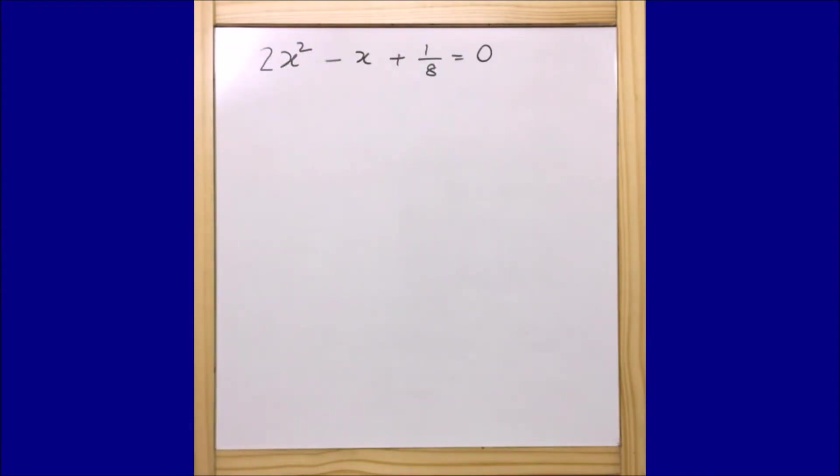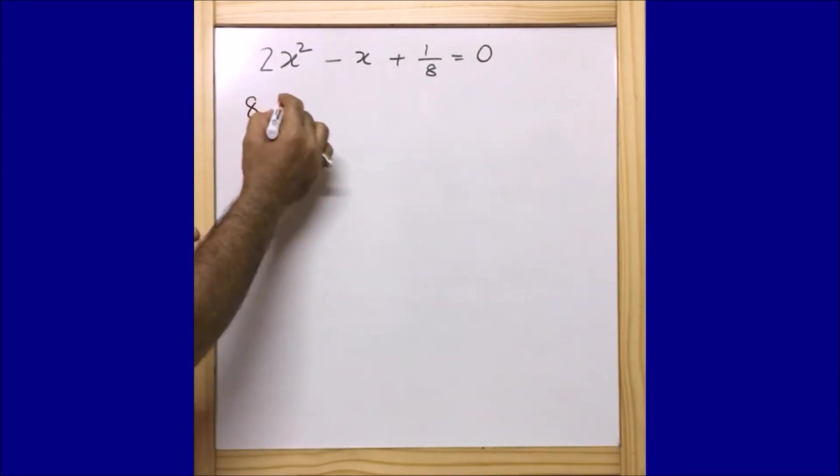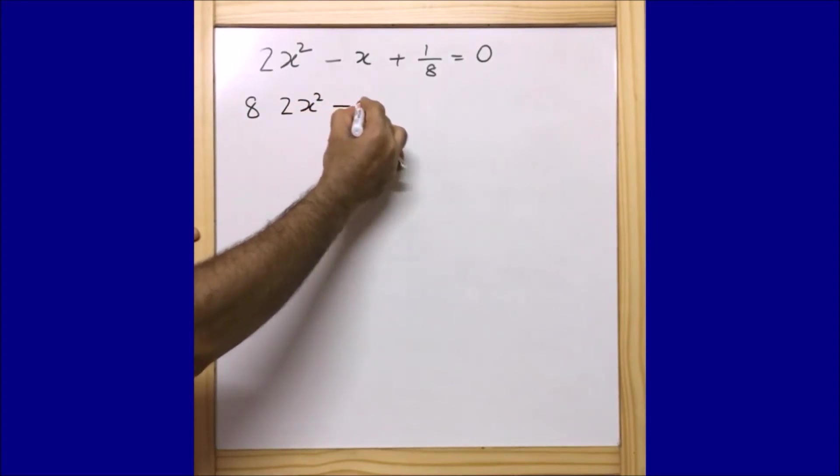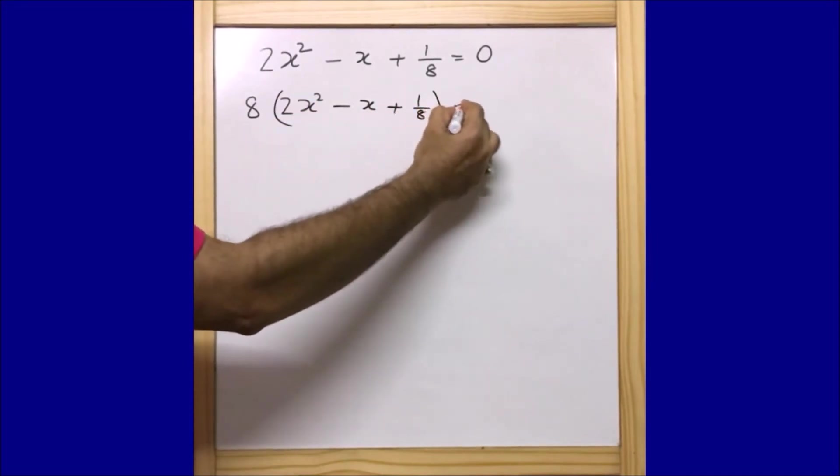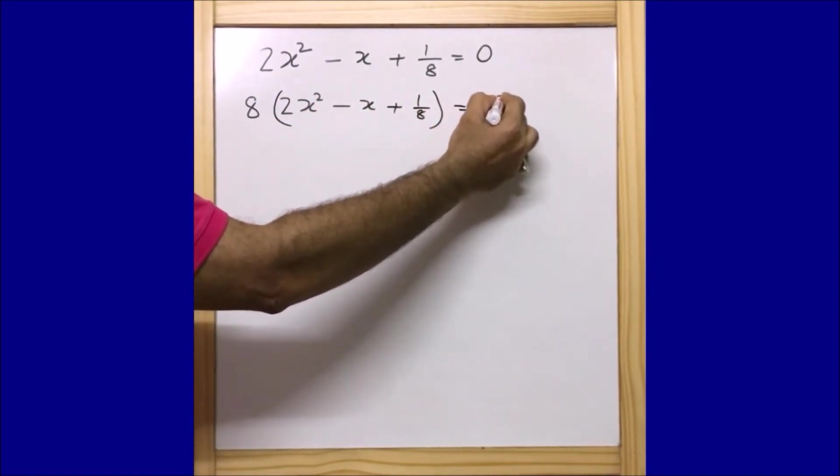Now let us multiply 8 to both sides of this equation. So I am multiplying 8 to both sides. 8(2x^2 - x + 1/8) = 8 × 0.